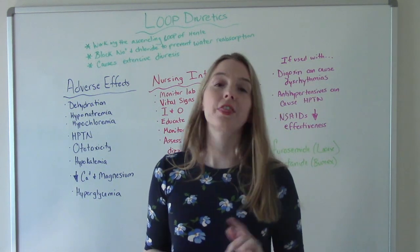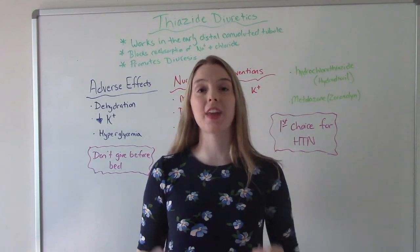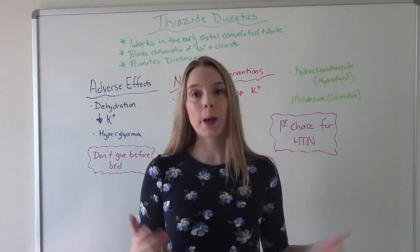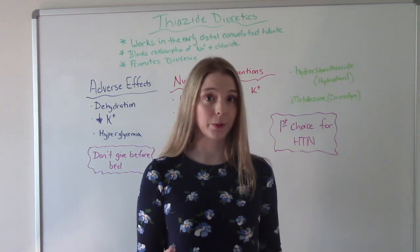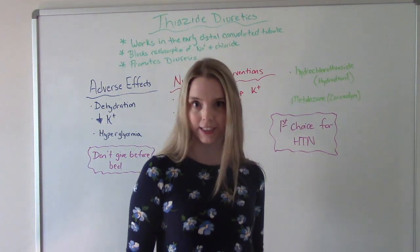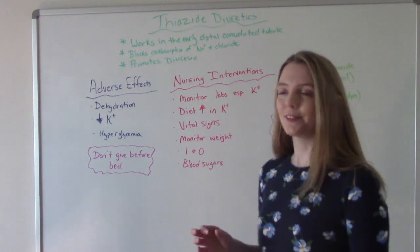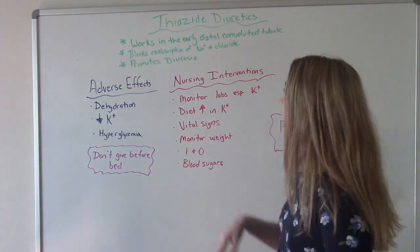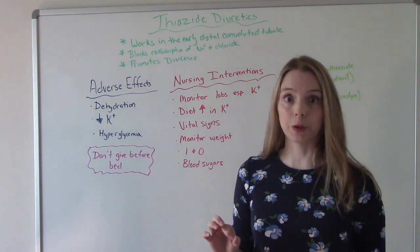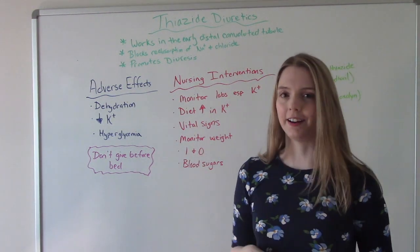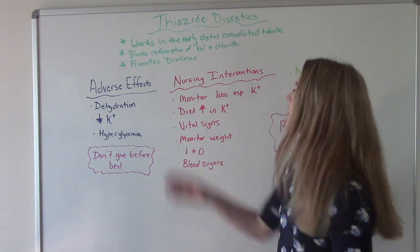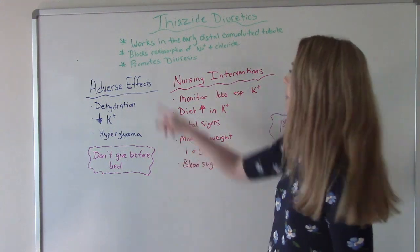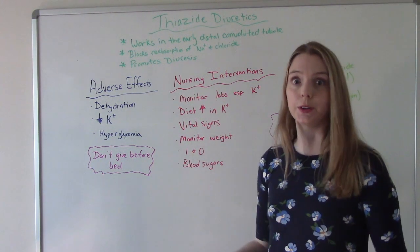Now let's talk about thiazide diuretics. You're going to notice a theme — they do pretty much the same thing as loop diuretics, but they don't act in the same location in the body, which makes them a little bit safer. Loop diuretics act in the loop of Henle; thiazide diuretics act in the early distal convoluted tubule. They block reabsorption of sodium and chloride, which blocks water reabsorption, and then they promote diuresis.